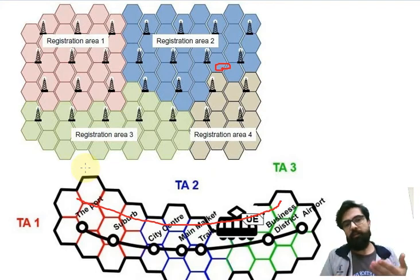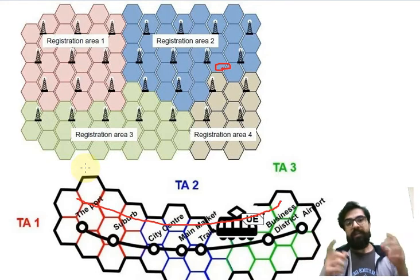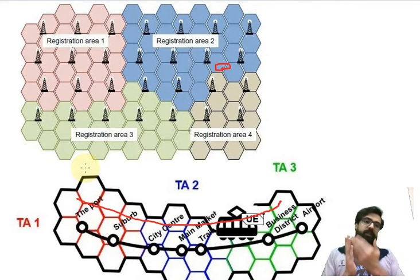After that we receive SIB1, SIB2, and the rest of them. SIB1 contains timing of the rest, and all of them have a tracking area number. The UE is always listening to the broadcasting messages.